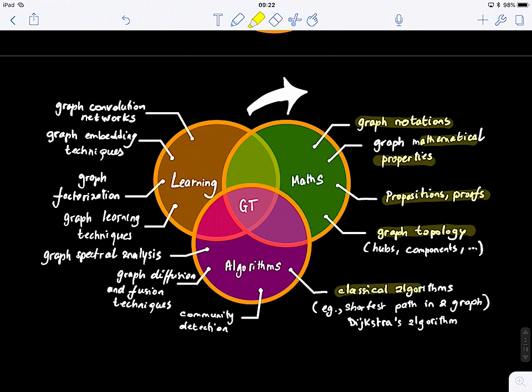Then we will look at algorithms like classical algorithms that are graph-based or try to solve graph-based problems. Shortest path, for example, in a graph, community detection, graph diffusion and fusion techniques, graph spectral analysis. All of these things are related to algorithms.